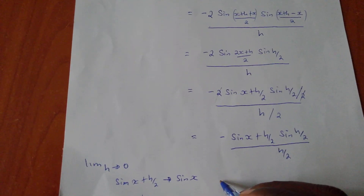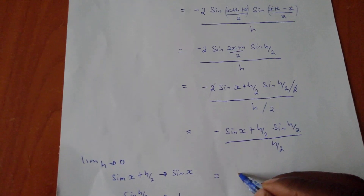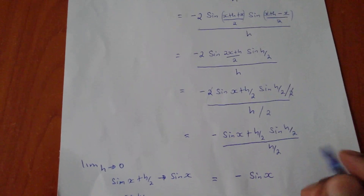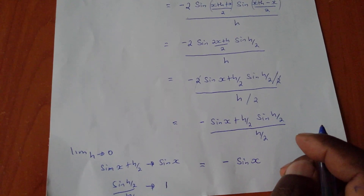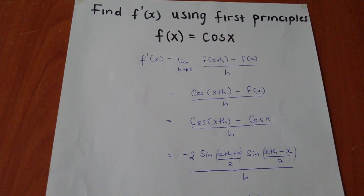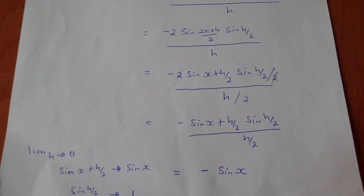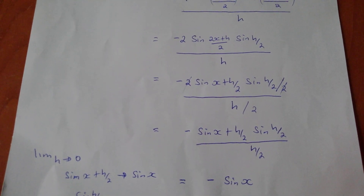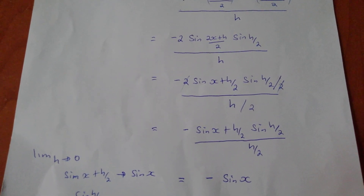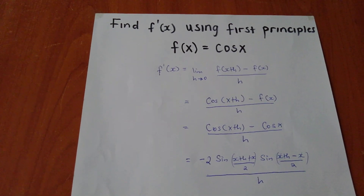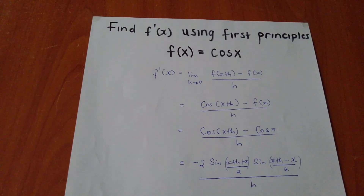So the final answer is negative sine x. If we differentiate cos x using first principles we get negative sine x. You can try other methods and they still work. Thank you very much — please like, subscribe, and comment for the growth of the channel.